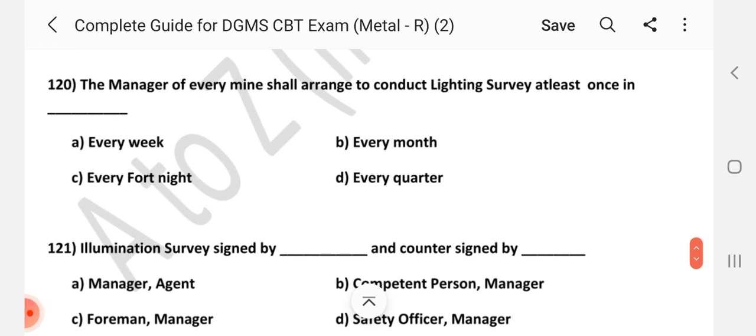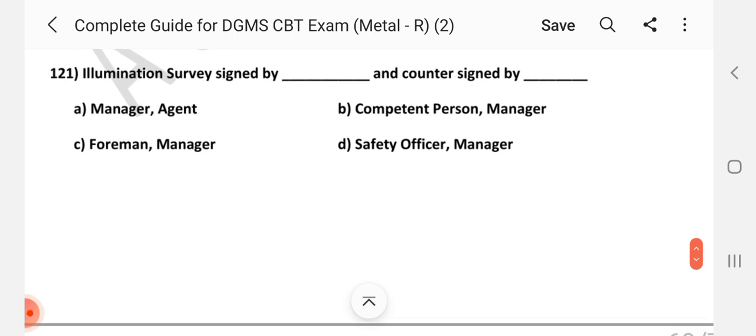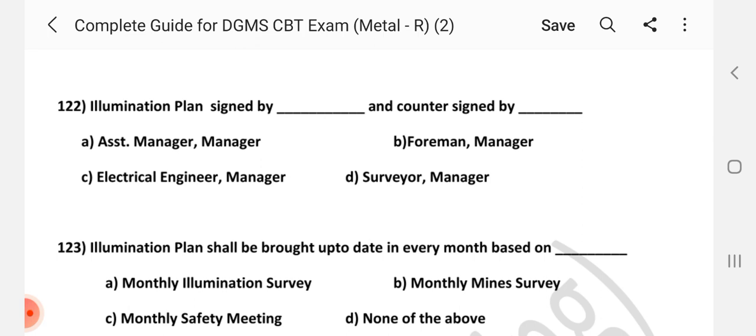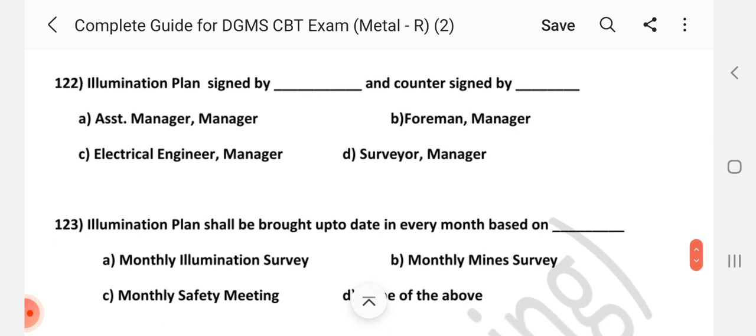Question number 119. Illumination scheme may include dash and duties and responsibilities of key officials. Answer is C, Illumination Plan. Question number 120. The manager of every mine shall arrange to conduct lighting survey at least once in dash. Answer is B, Every Month. Question number 121. Illumination Survey signed by dash and countersigned by dash. Answer is B, Competent Person and countersigned by manager.